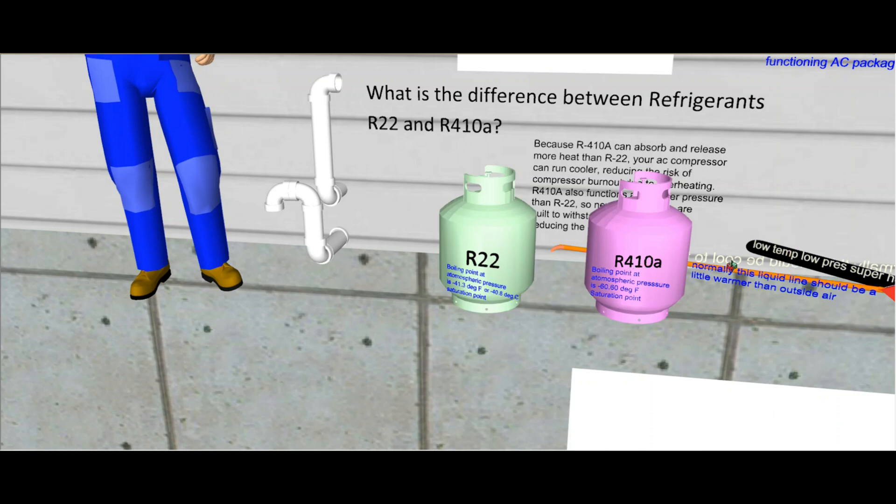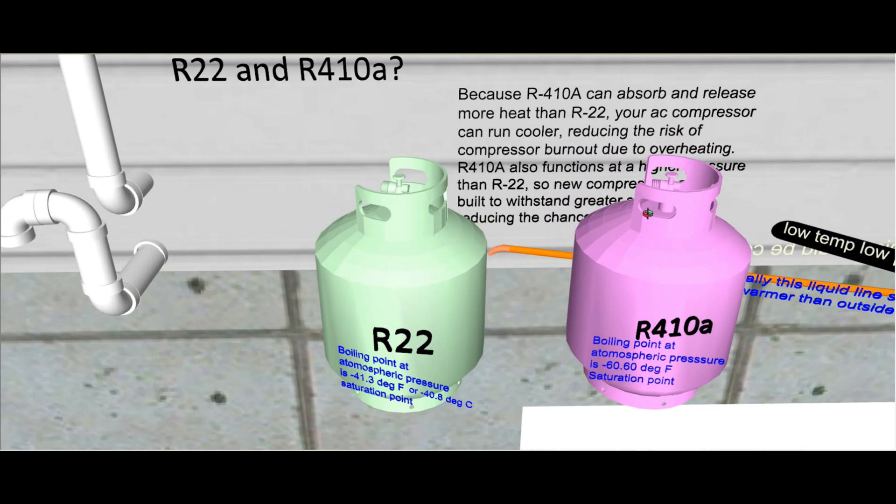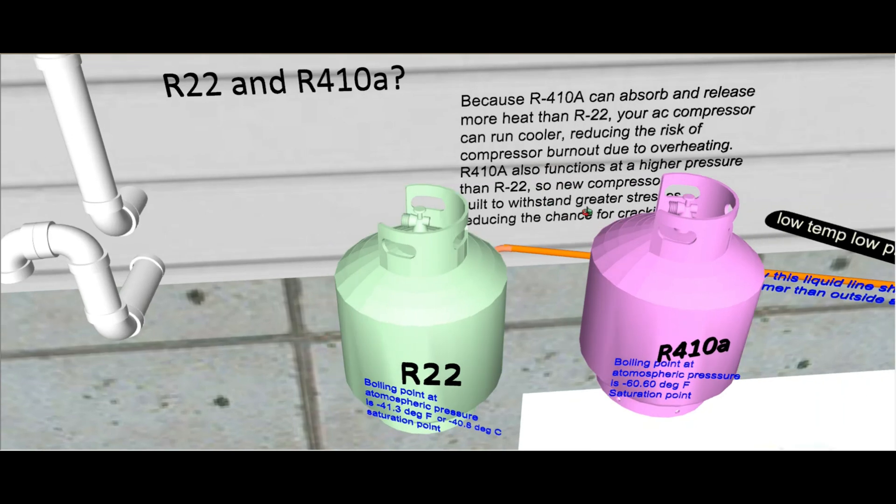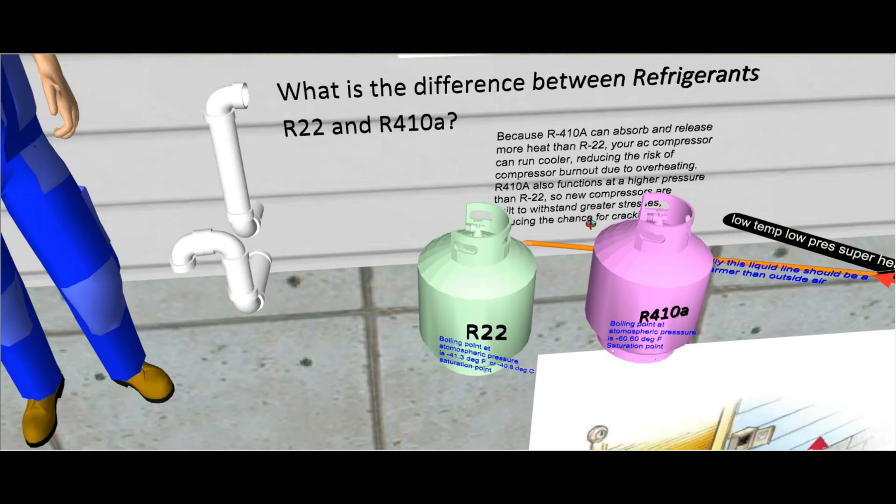What's the difference between them? Well, as you can see here, the 410A can absorb and release more heat than R-22, and your AC compressor which is found in the condenser can run cooler, reducing the risk of compressor burnout due to overheating. It also has a larger range of pressures on it, which helps because we want to manipulate the refrigerant that is located in these lines because we want it to absorb heat and reject heat and go in a circle and thereby cool down your house. So let's figure out how they did that.